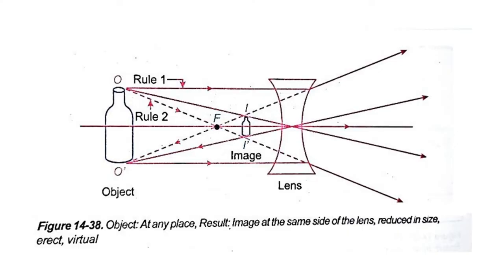Now, in this figure, we can see that if you place an object in front of a concave lens at any place, the result will still be that the image is on the same side of the lens and always be reduced in size, erect, and virtual.